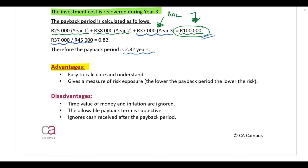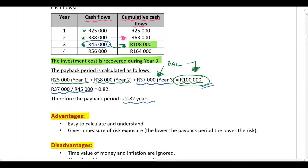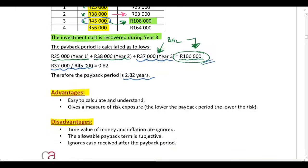The disadvantages of this method: firstly, time value of money and inflation are ignored. In the calculation above we took the cash flows as given without accounting for time value of money, and that is a massive disadvantage of this method.